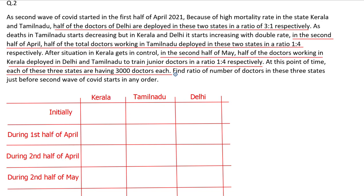We know the last number. The timeline is: first half of April, then second half of April, and then second half of May. In the second half of May, each and every state has exactly 3000 doctors. Since we know the last number, we should use a backward approach.